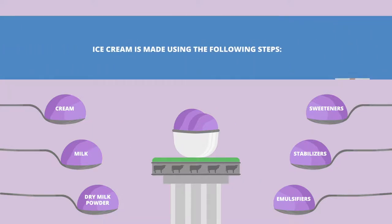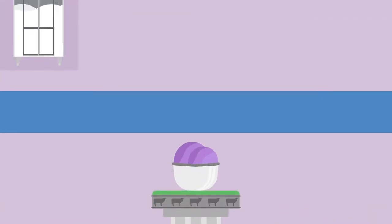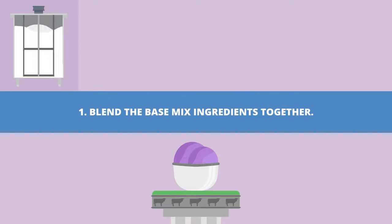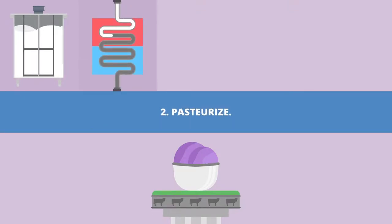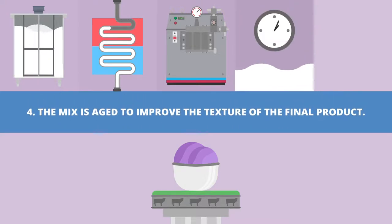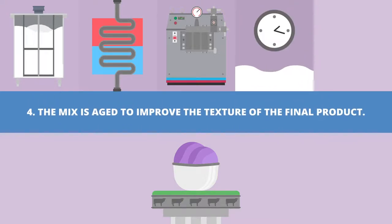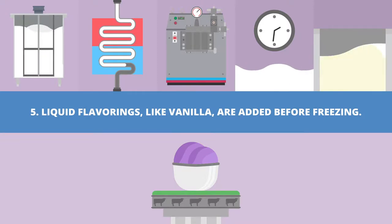Ice cream is made using the following steps. Blend the base ingredients together, pasteurize, and homogenize the mix to get the fat well distributed. The mix is aged to improve the texture of the final product. Liquid flavorings like vanilla are added before freezing.